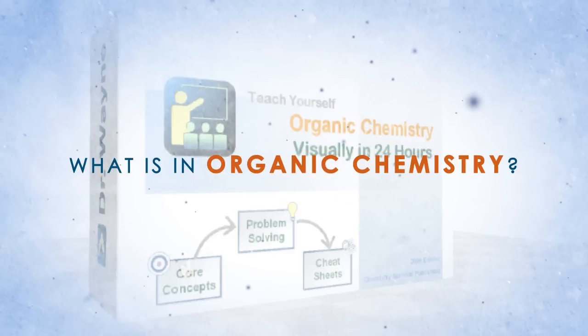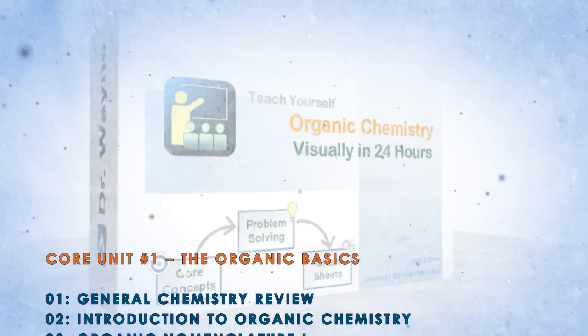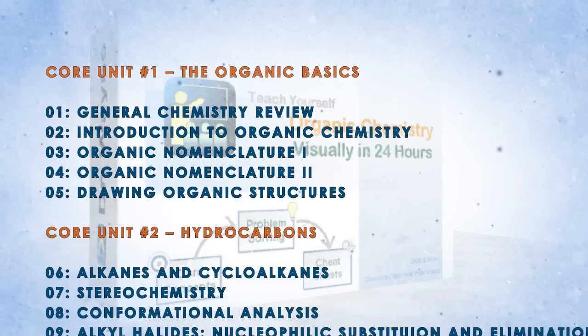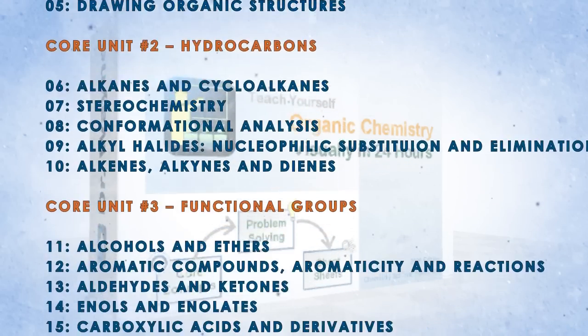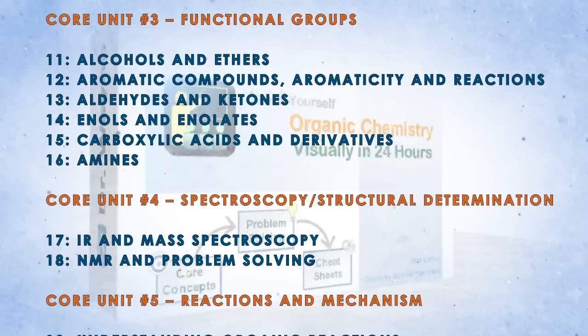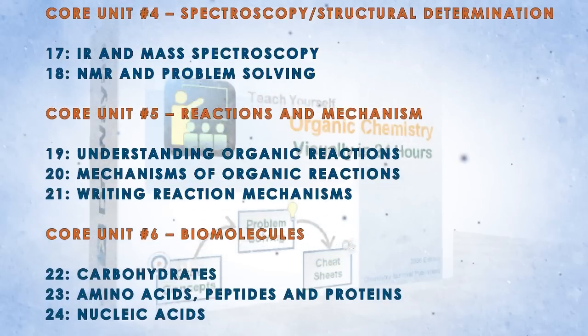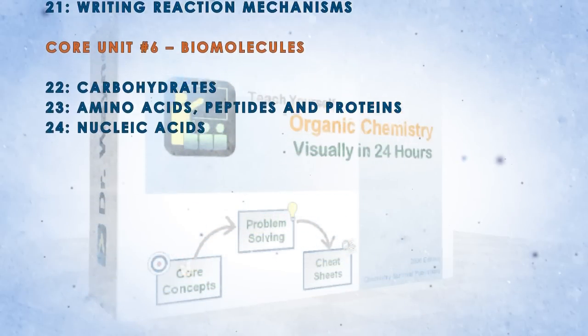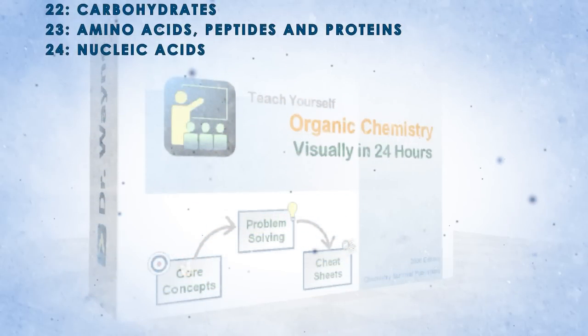Our organic chemistry visual course covers a traditional two-semester curriculum: the basics of organic chemistry, hydrocarbons, functional groups, spectroscopy and structural determination, and biomolecules. Learn it visually and master it the rapid learning way.